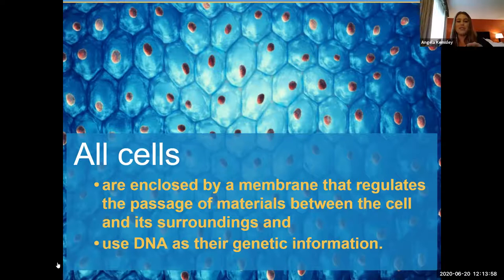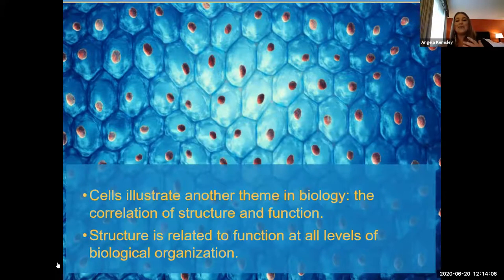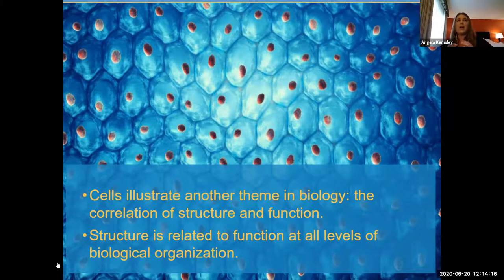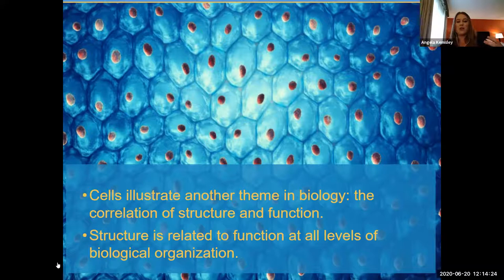All cells are enclosed by a membrane that helps regulate the passage of material between the cell and its surroundings — some kind of envelope, cell wall, or covering that only lets certain things in and certain things out. All cells use DNA as their genetic information. Cells also illustrate an important theme in biology: the correlation of structure and function. The reason things are shaped the way they are is for a reason — they have a specific structure because they perform a specific function. Take a look at your thumbs — they look the way they do because they need to be able to grab things. That's structure and function, and it's related at all levels of biological organization.